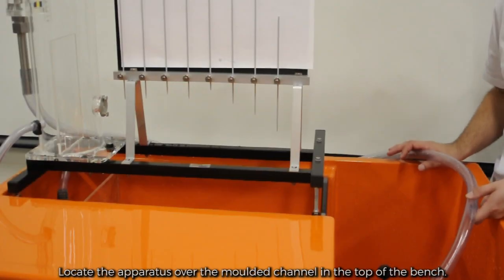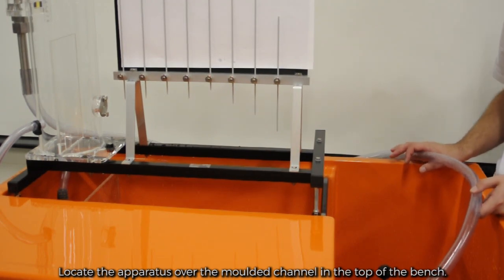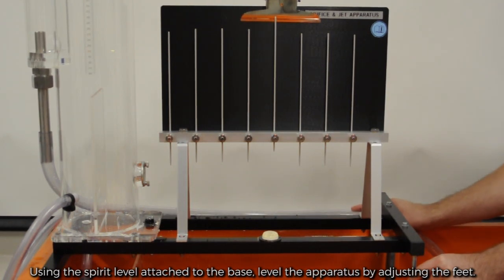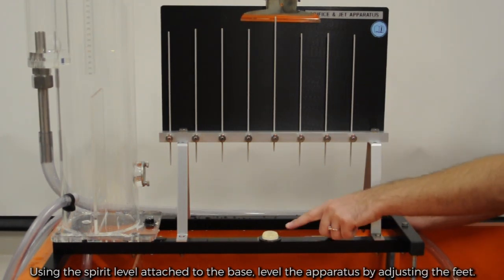Locate the apparatus over the molded channel in the top of the bench. Using the spirit level attached to the base, level the apparatus by adjusting the feet.